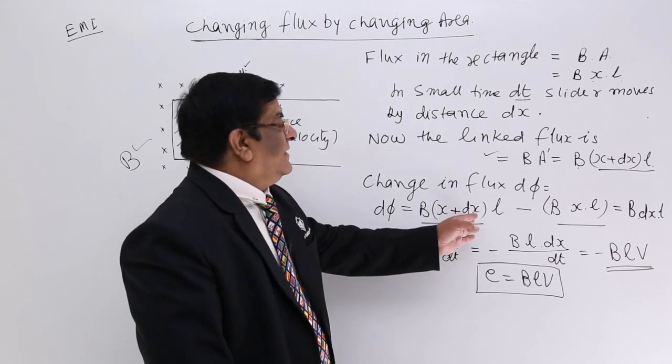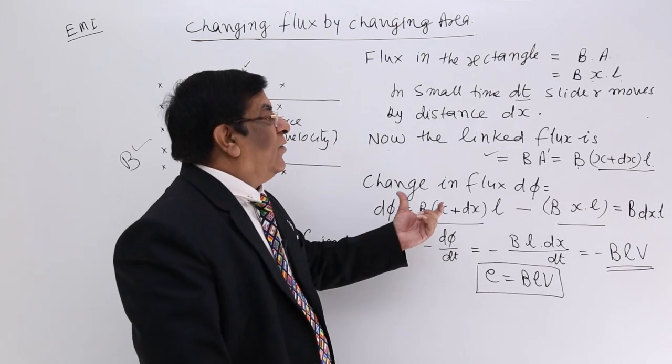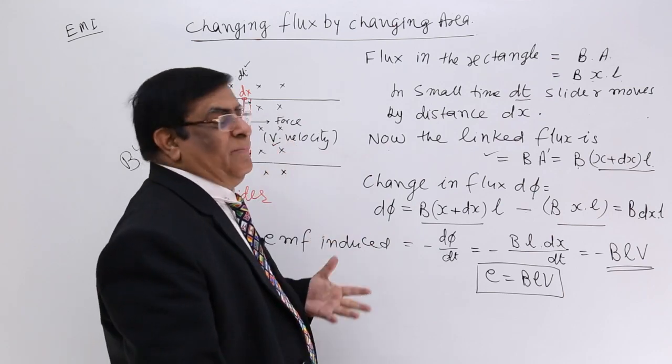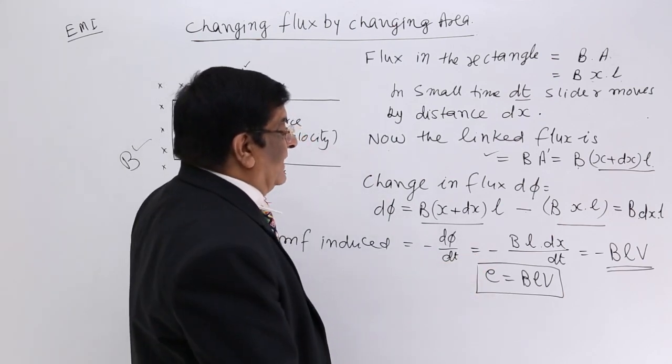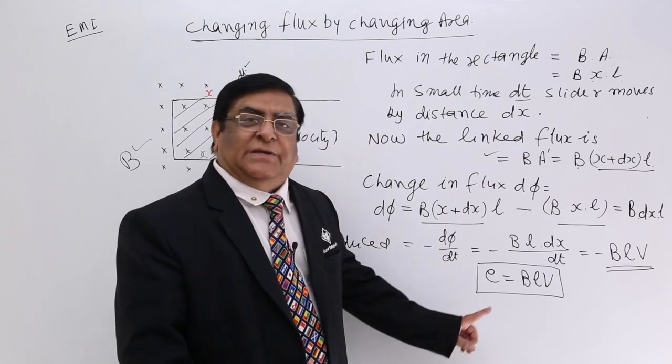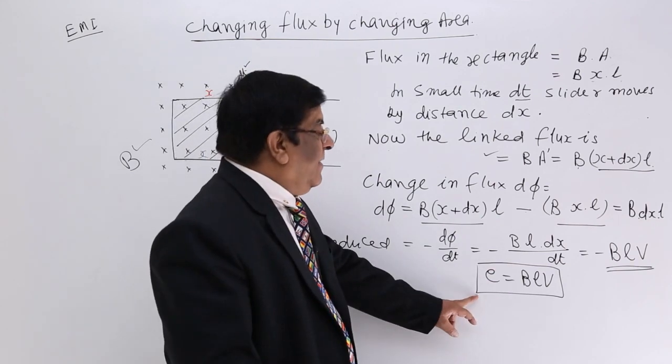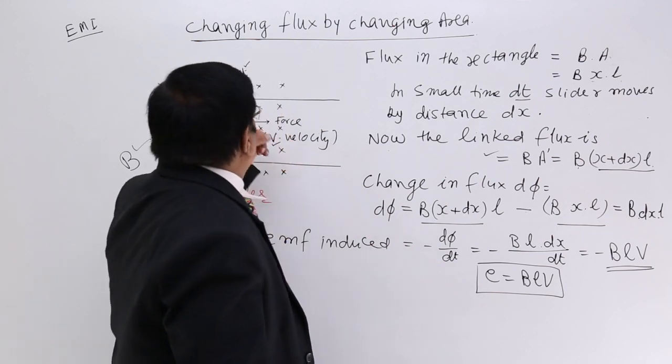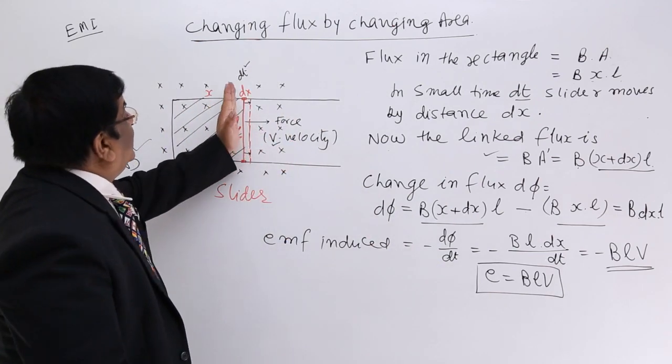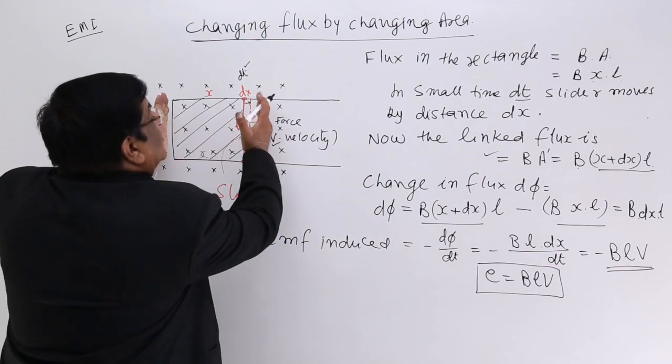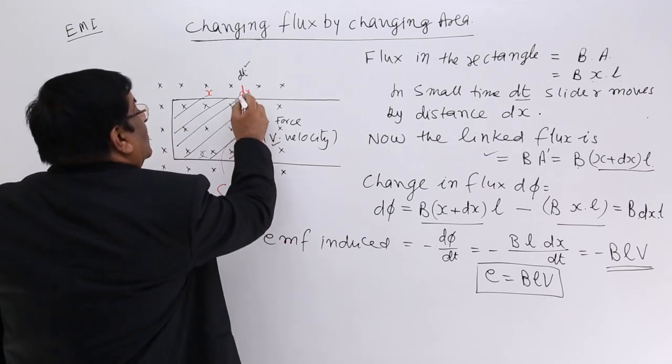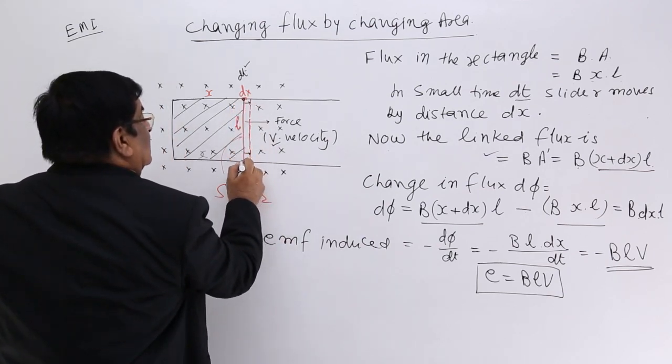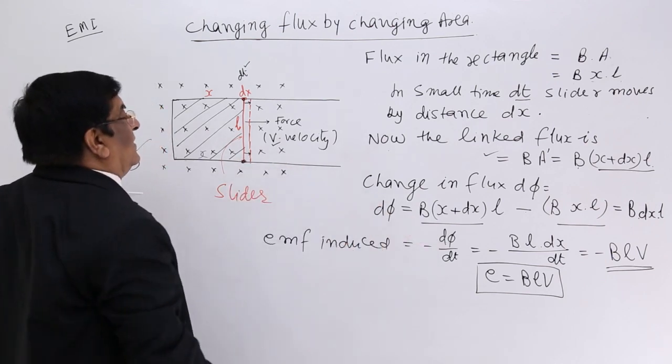Now it depends on the values to decide the direction. So we are concerned with the magnitude and that is E is equal to BLV. So remember this is induced emf when the slider goes and the area goes on changing. Now if I want to know what is the emf between these two points, this is the formula BLV.